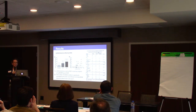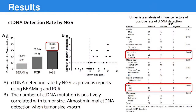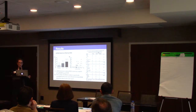Their ctDNA detection rate was 56% — 18 out of 32 cases had a detectable molecular profile. They compared this to prior studies where beaming had a detection rate of 16.7% and PCR was 39.5%, though I do question the low rates used for comparison.